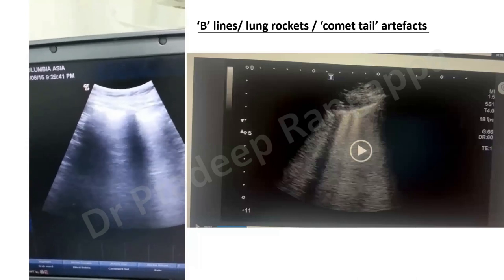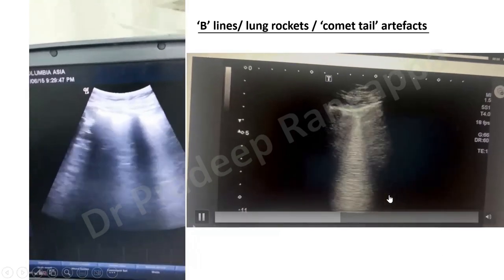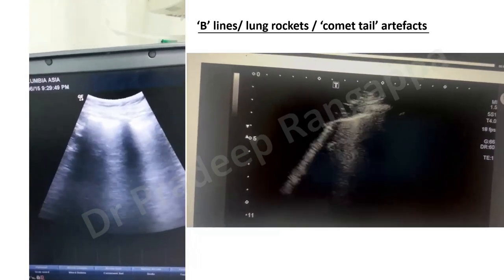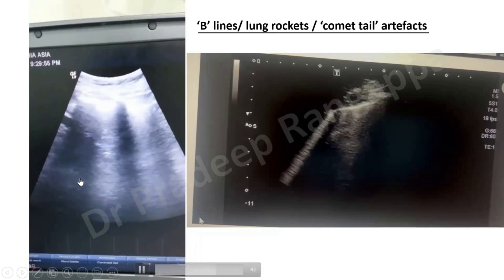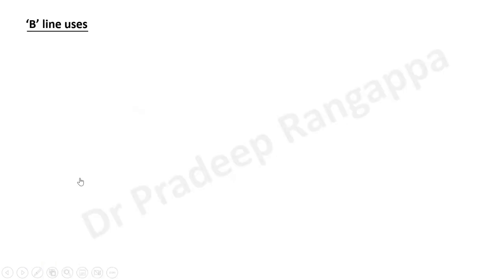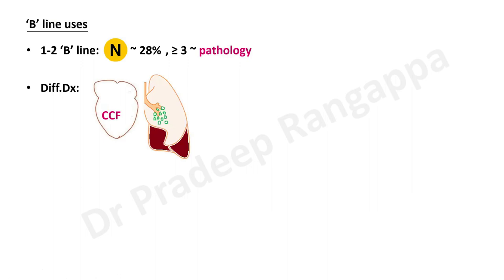Here is a video from our ICU showing B-lines — this is severe pulmonary or alveolar edema where the distance between B-lines is less than three millimeters. One to two B-lines can be normally present in 28% of normal lungs. More than three B-lines indicates underlying pathology such as interstitial or alveolar edema. The differential diagnosis includes congestive cardiac failure, pulmonary edema, pneumonia, ARDS, or interstitial lung disease.